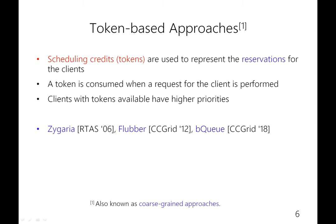Token-based approaches, also known as coarse-grained approaches, are widely used for reservation guarantees. Scheduling credits, also known as tokens, are used to represent the reservations for the clients. For example, if a client's reservation is 100 IOs, it will be given 100 tokens every second. At runtime, a token will be consumed when an IO for the client is performed, and clients with tokens available have higher priorities.